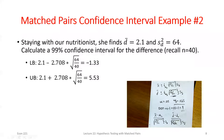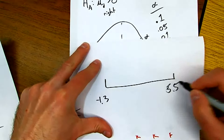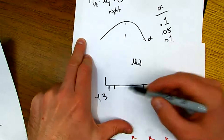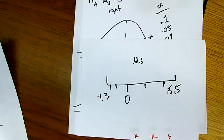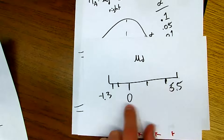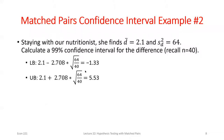The lower and upper bounds come out to negative 1.3 and 5.5. The true mean difference could be negative, positive, or even zero. With 99% confidence, we really can't say much — it could be that average calorie consumption went down, went up, or didn't change at all. We have pretty inconclusive evidence based on our sample.